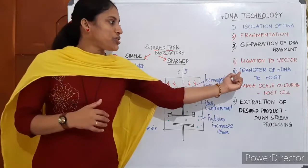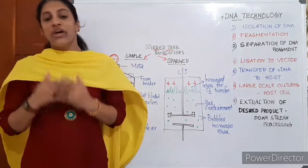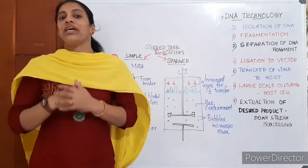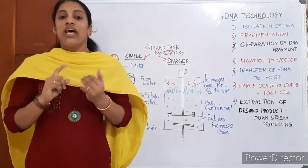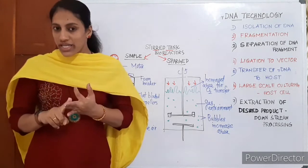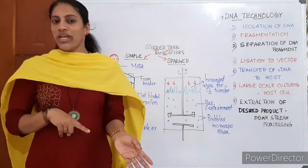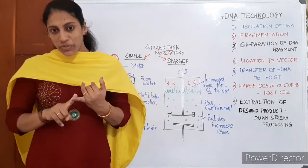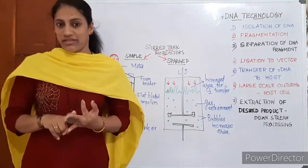In order to transfer the R-DNA to the host cell, the host cell is treated with divalent cations. Then ice incubation — ice technique in bacterial cells. Divalent cation treatment, then ice, heat shock, ice.